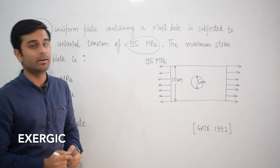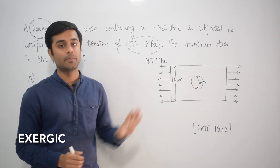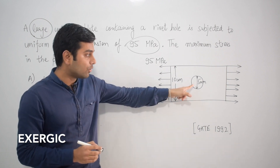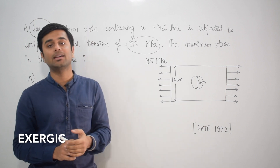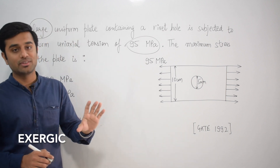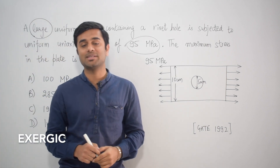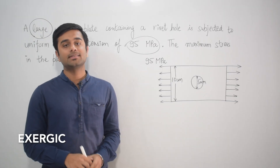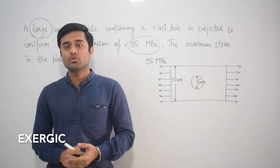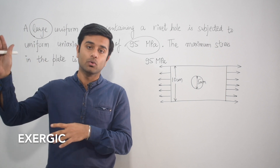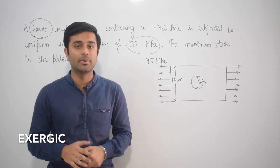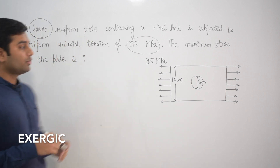The width of the plate is 10 cm and the hole size is 5 mm. However, in some sources this hole diameter is given as 5 cm, and in others as 5 mm. I will discuss both cases so you can see how interestingly this question has been made. This is a previous year GATE 1992 question, so it's difficult to confirm the official value.